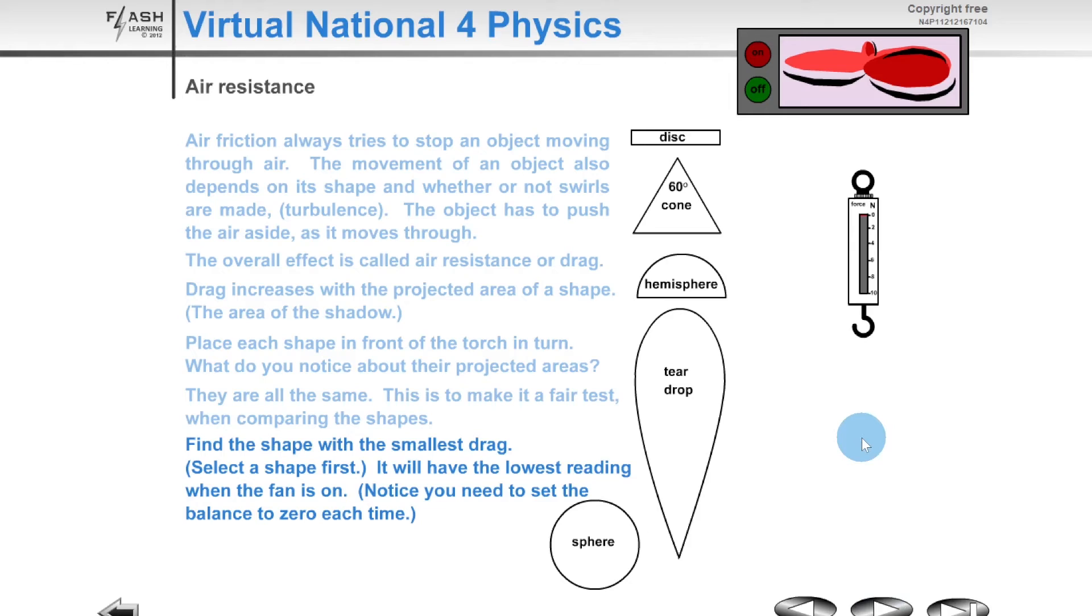Now let's say we wanted to carry out an experiment to investigate the effects of air resistance on different shapes of objects. We have a disc, 60 degree cone, hemisphere, teardrop shape, and a sphere. The setup here is that we have a fan, and then below it we have this Newton balance, which we can attach our different shapes onto, and then measure the force that is exerted from the fan onto the different shapes. You might be able to guess which of these shapes is going to be the most streamlined, and therefore produce the smallest amount of air resistance. But let's just compare them all.